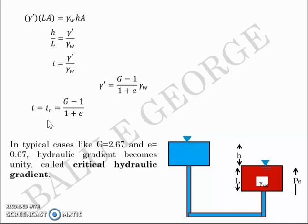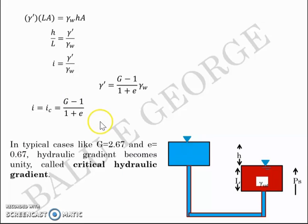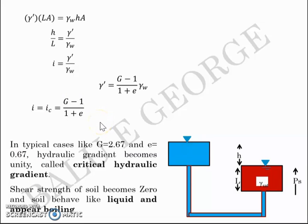For a typical case with specific gravity G = 2.67 and void ratio e = 0.67, the critical hydraulic gradient = (2.67 − 1) / (1 + 0.67) = 1, or unity. At the critical hydraulic gradient, the shear strength of the soil becomes zero and the soil behaves practically like a liquid, appearing to boil — this is the quicksand condition.